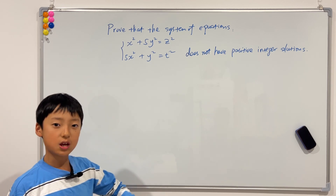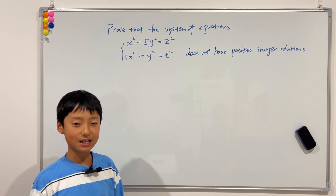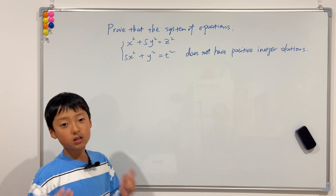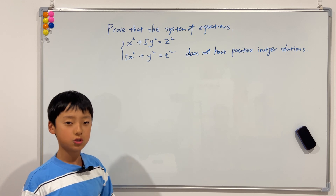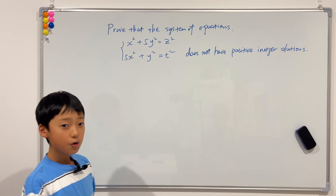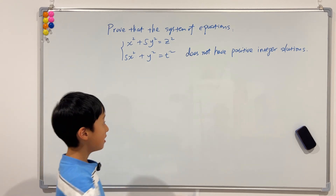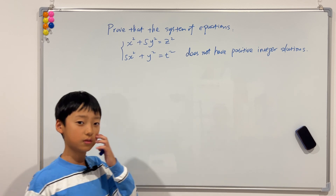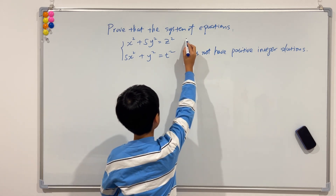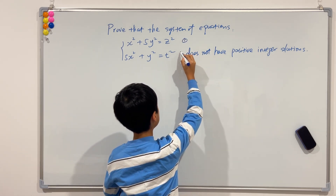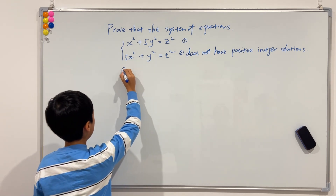This question is actually very good practice for using Fermat's infinite descent principle. We're going to use the infinite descent principle and because of that we're also going to use proof by contradiction. So we're first going to assume that this system of equations does have a positive integer solution. Let this first equation be equation one and this be equation two.